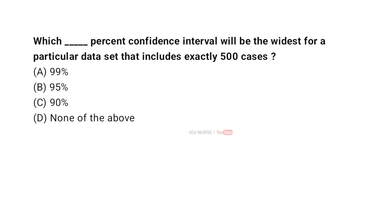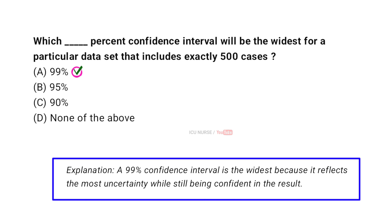Which percent confidence interval will be the widest for a particular data set that includes exactly 500 cases? The correct answer is A: 99%. A 99% confidence interval is the widest because it reflects the most uncertainty while still being confident in the result.